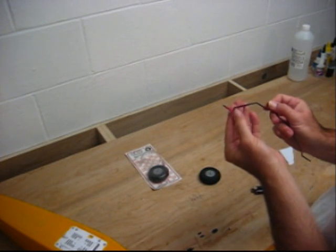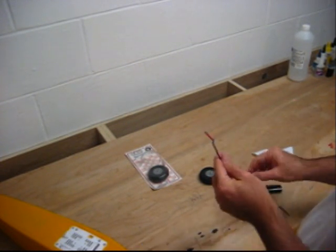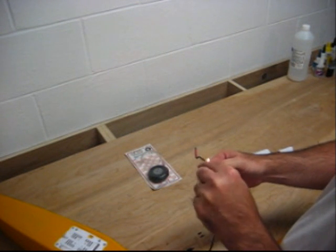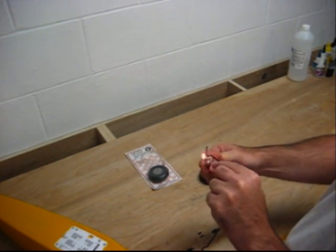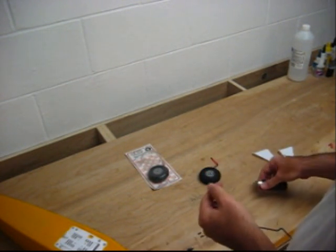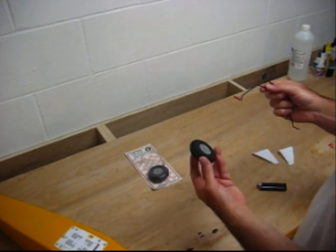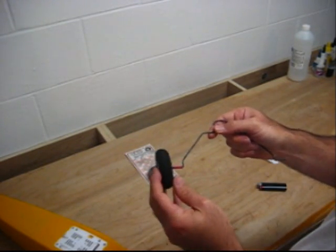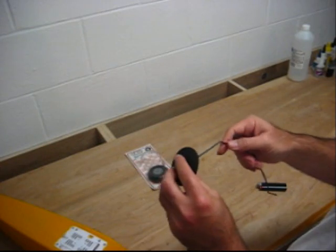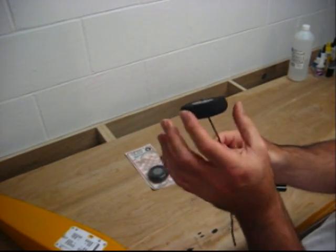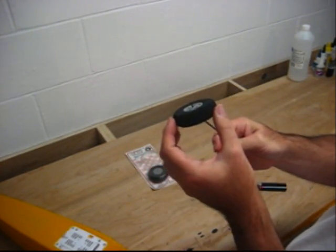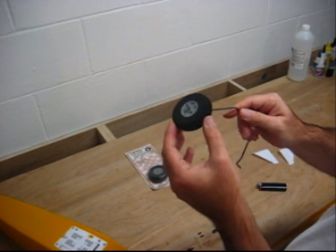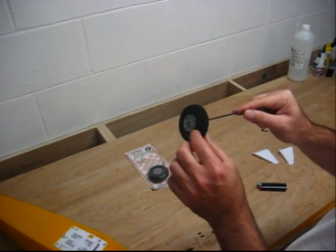That should be enough to take up whatever excess slop is in the difference in diameter between the axle and the hub. Then the wheel should just slip right on, which it does. Now there's no play, well there's a tiny little bit of play, but that's to be expected. You don't want it so tight that it'll bind up.